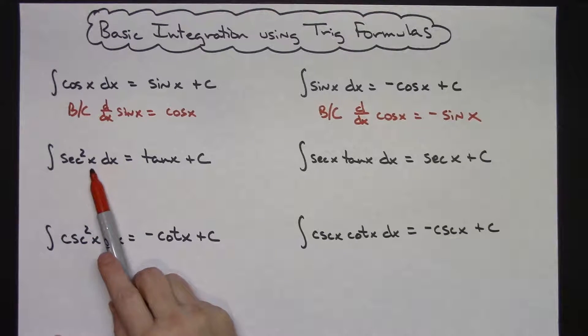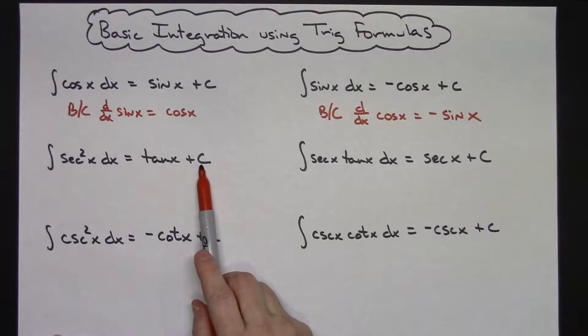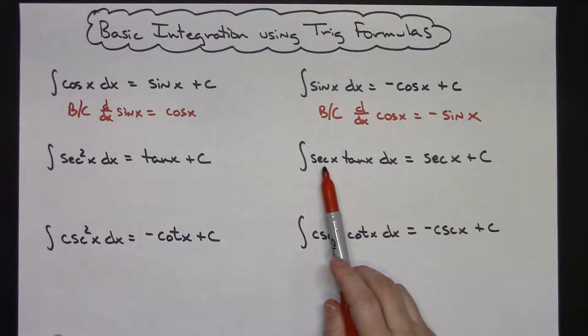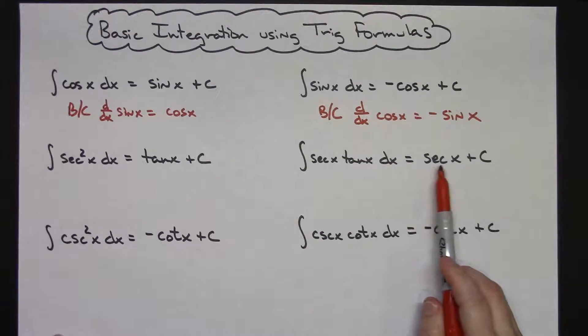When we integrate secant squared x dx, we get tangent x plus c. When we integrate secant x tangent x dx, we get secant x plus c.